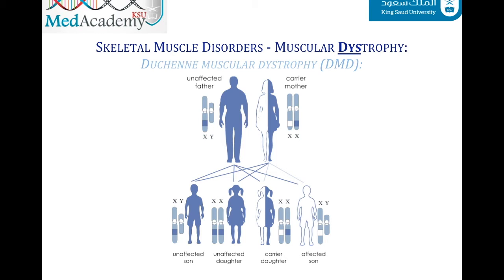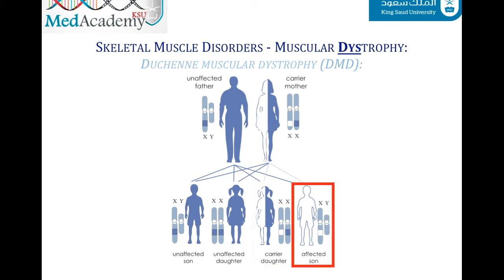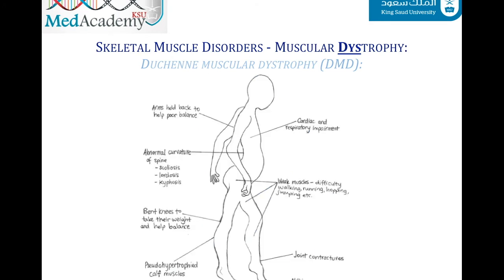If this occurs, the girl is called a carrier of Duchenne — she can pass the disease to her sons, and her daughters can also be carriers, but she herself will not have the disease. Males have only one X chromosome, so if that chromosome carries the Duchenne gene mutation, they will definitely develop the disease.